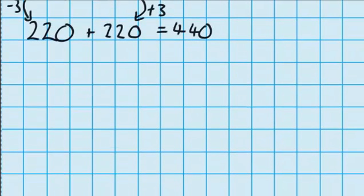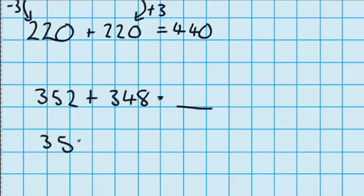Let's try another question a bit like that. 352 plus 348 equals something. Well, straight away you can probably see that both of these numbers are close to 350. So that's what I'm going to change them to.